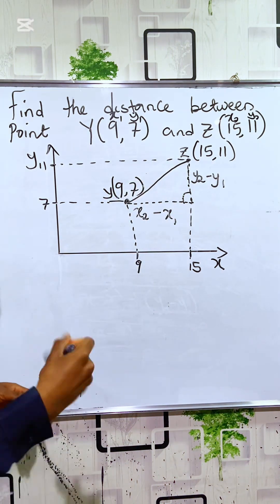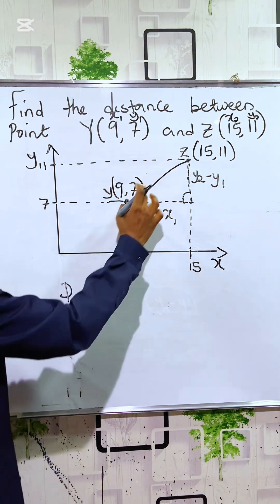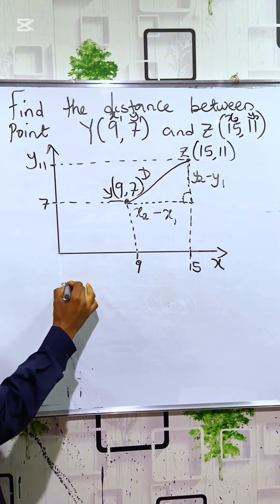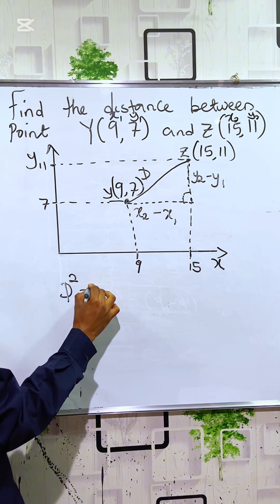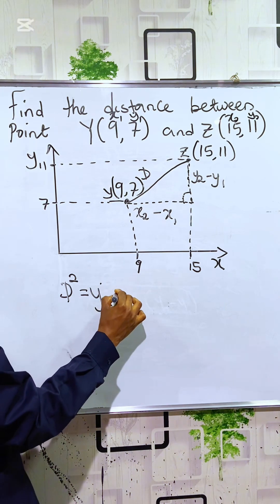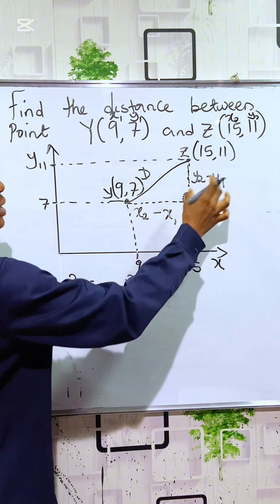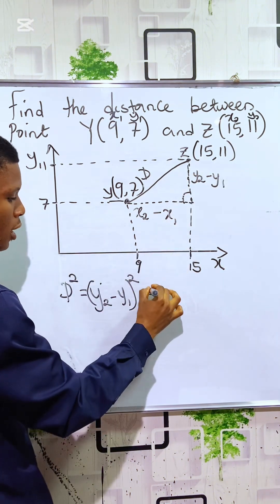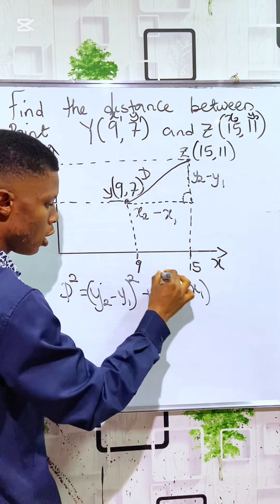To do that, you can now see that the distance between two points D, which is here. Let's represent here to be D. D squared, applying Pythagoras' rule, is equal to Y2 minus Y1 all squared, plus X2 minus X1 all squared.